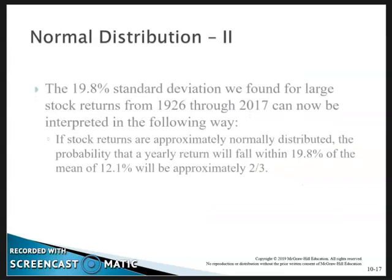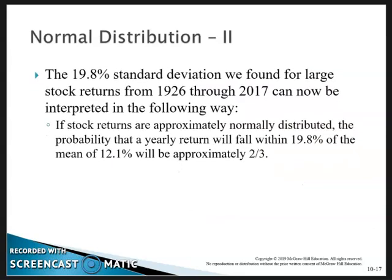More on the normal distribution: The 19.8% standard deviation we found for large company stocks can now be interpreted in the following way. Stock returns are approximately normally distributed. The probability that your return will fall within 19.8% of the mean of 12% will be approximately two-thirds. That's pretty wide variation.